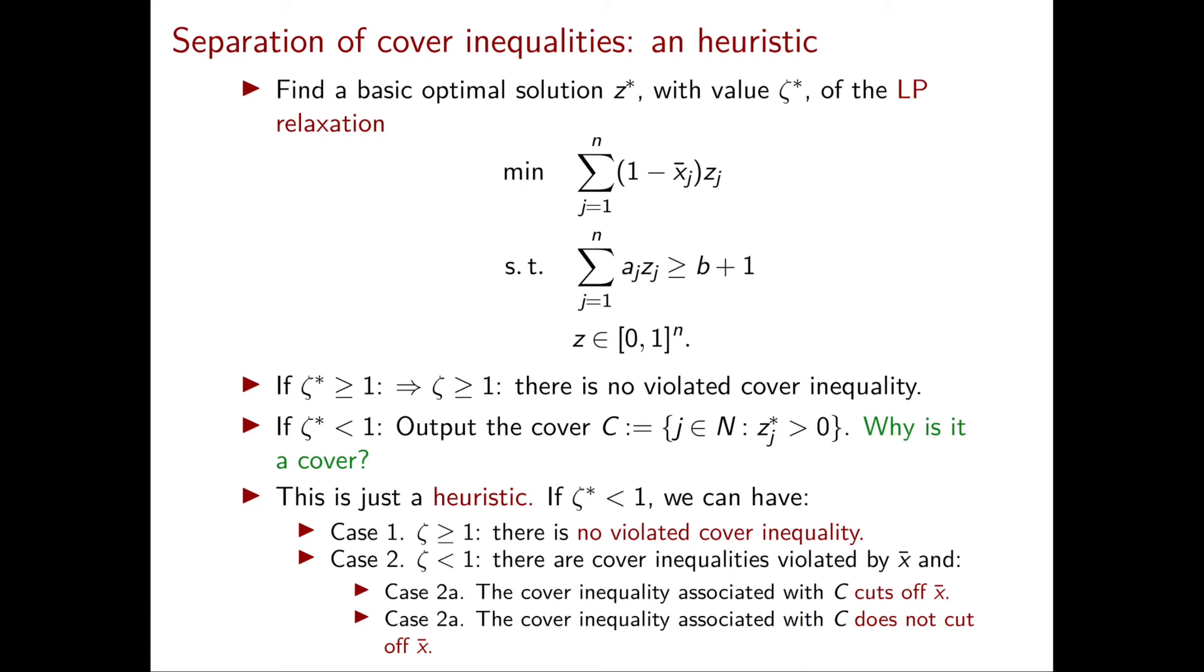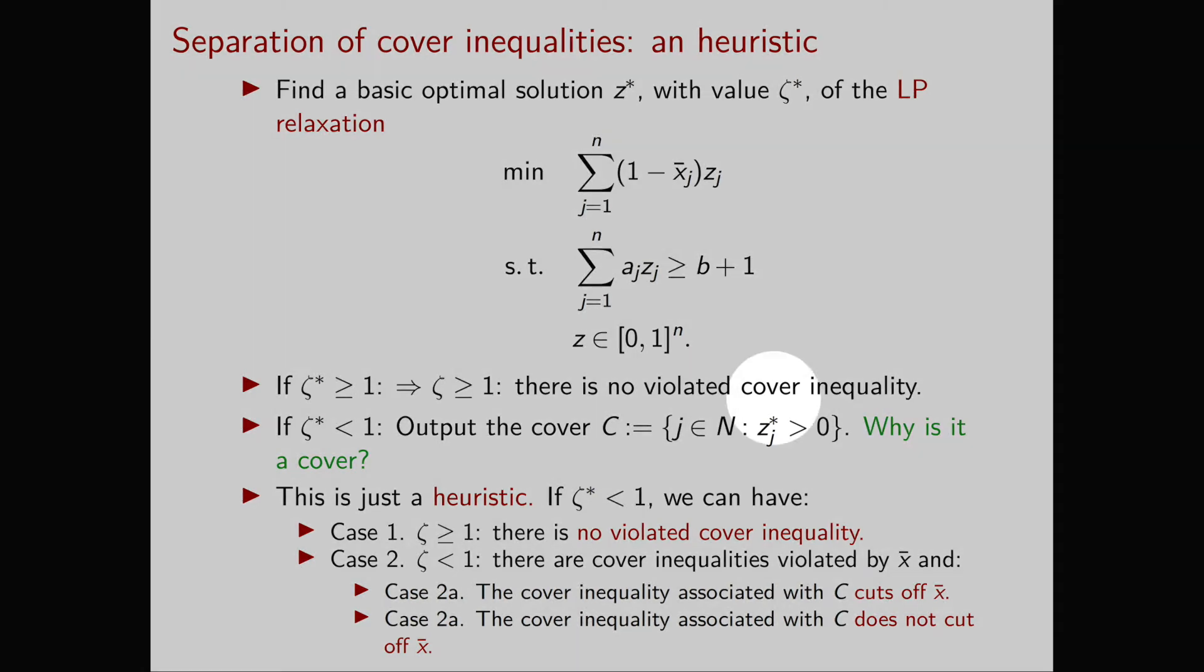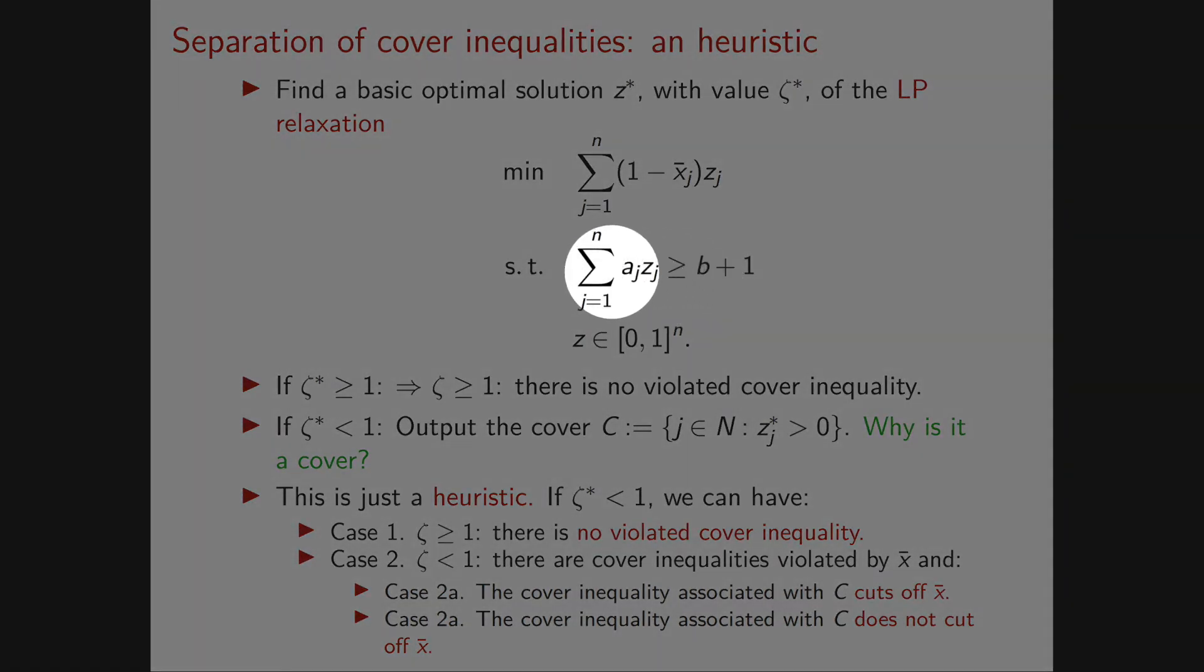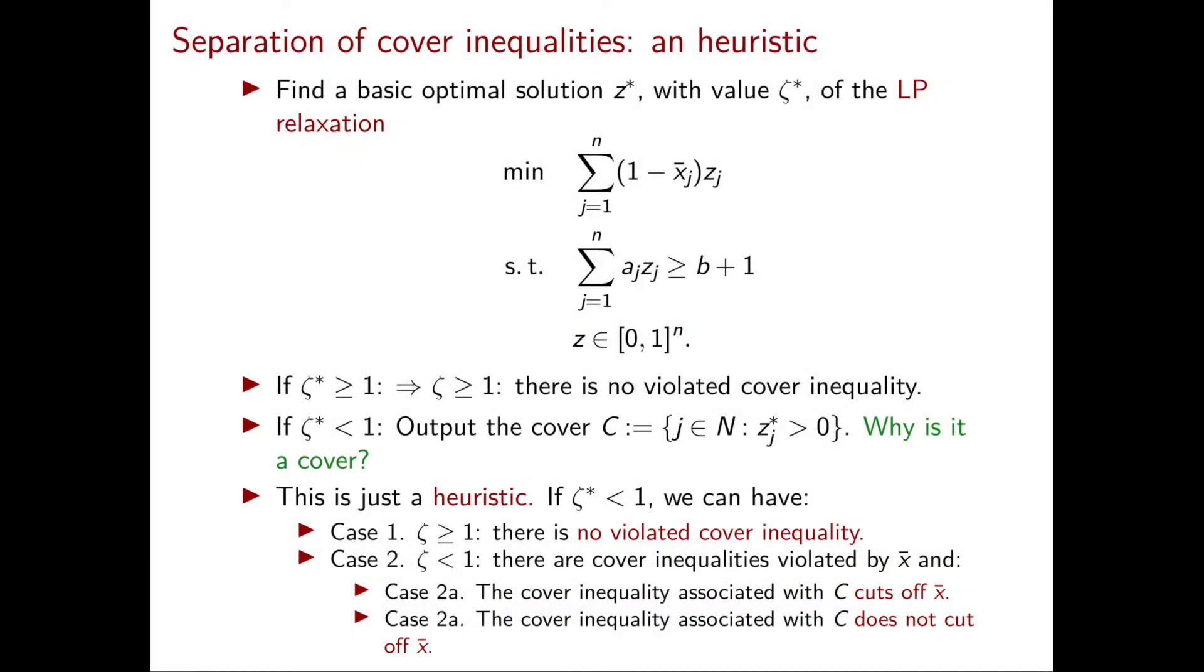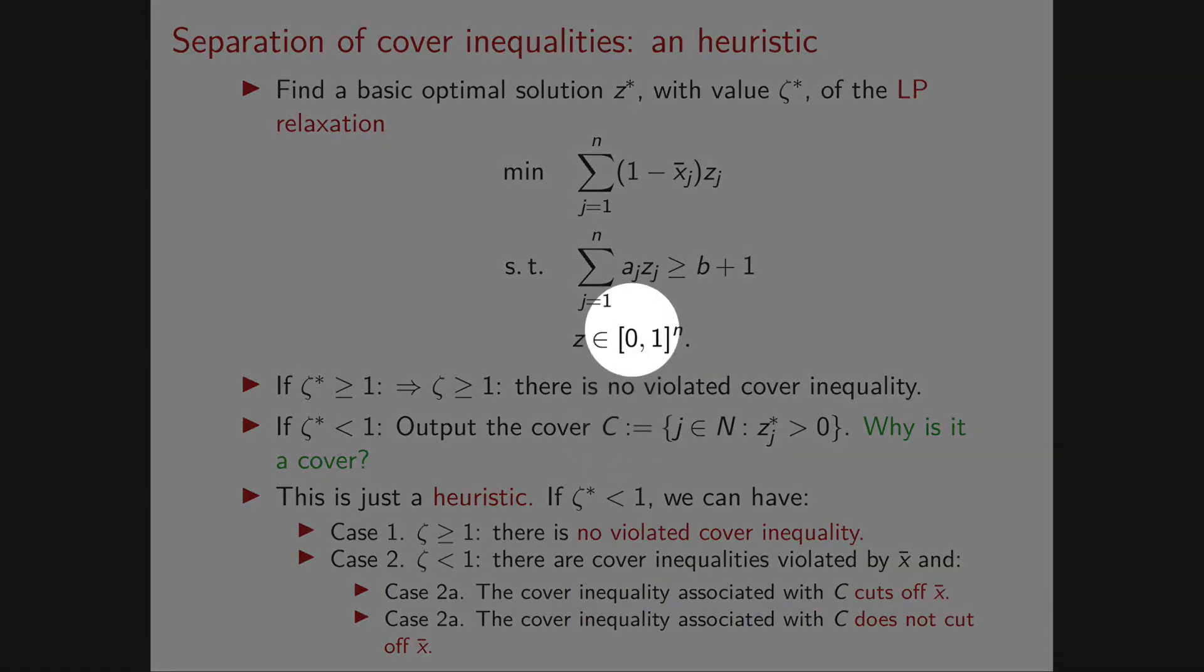The first thing we should observe is that this indeed is a cover. This is clear because z* is feasible for this LP, so it satisfies this linear inequality. So the sum of aⱼz*ⱼ is greater than or equal to b + 1. Now, when we consider this cover C, we're essentially taking the ceiling of every z*ⱼ.